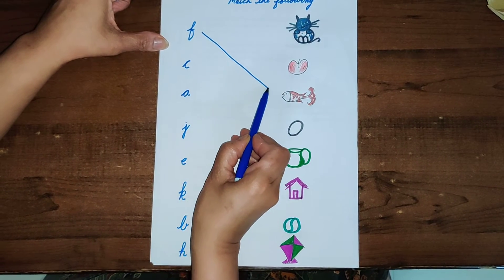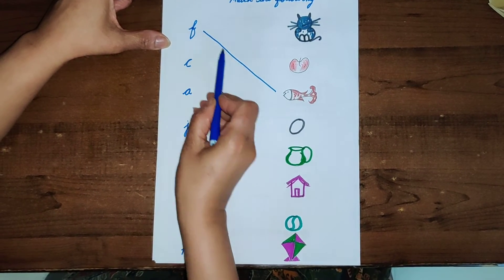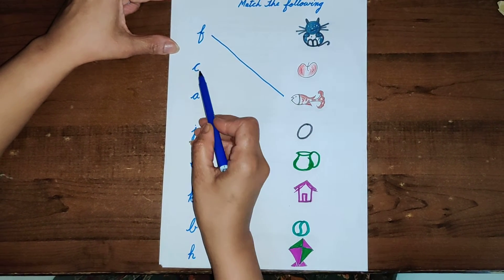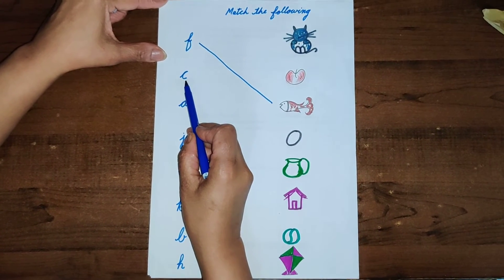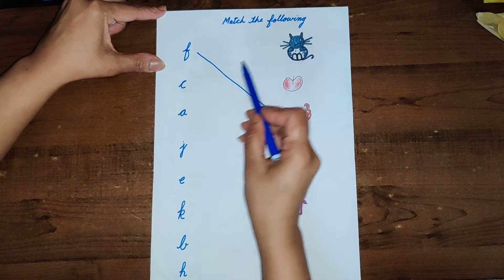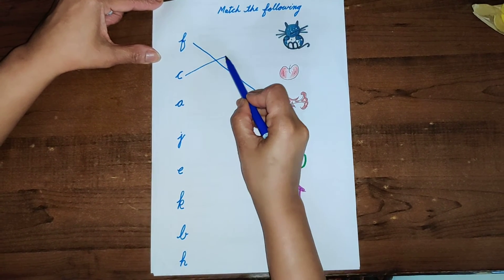Then next alphabet is C. We'll match the C with the cat. C for cat.